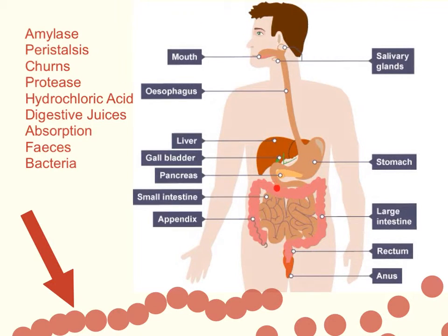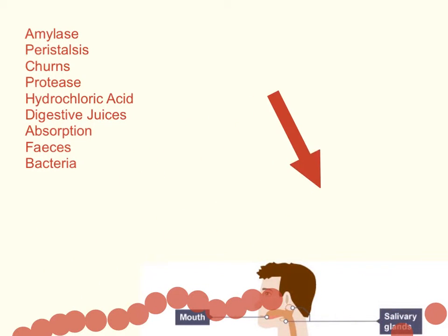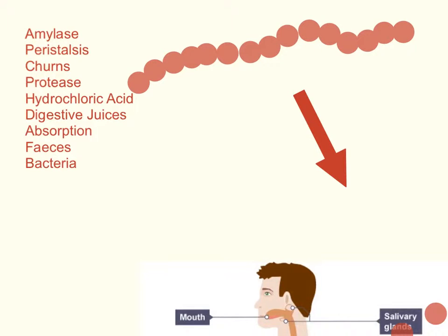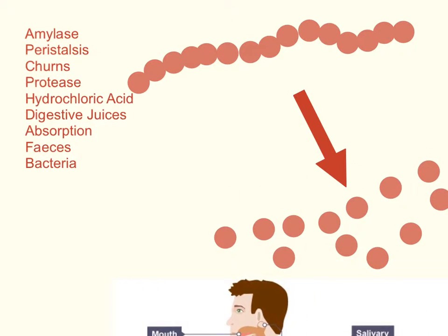After the stomach, the food passes into the small intestine, and this is where digestion is completed. Digestion means these enzymes break up large molecules — such as starch — into smaller molecules that are soluble and can pass through the wall of the gut into the blood, where they can be absorbed.